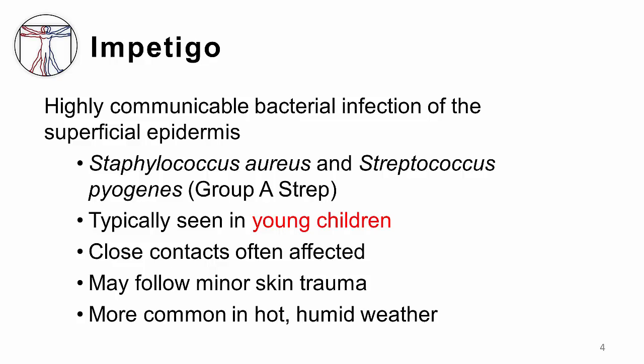Contact sports can also predispose to infection. Although it typically has an acute spontaneous onset, Impetigo can sometimes occur secondary to a prior skin trauma, such as an insect bite, eczema, or varicella infection. Impetigo is most common in climates that are warm and humid, or in temperate climates during the summertime.